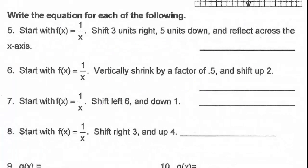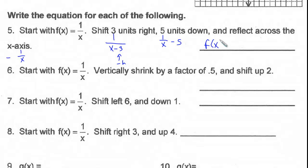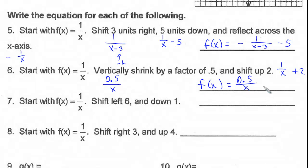Now we're going to write the equation for each of the following. Start with f of x equals 1 over x. If we shift 3 units to the right, this is 1 over x minus 3 — remember we always use negative h. Five units down gives 1 over x minus 5. Reflect across the x-axis gives negative 1 over x. Putting it together: f of x equals negative 1 over x minus 3, minus 5. For number 6, a vertical shrink by a factor of 0.5 gives 0.5 over x. Shift up 2 gives plus 2. So the full equation is 0.5 over x plus 2.